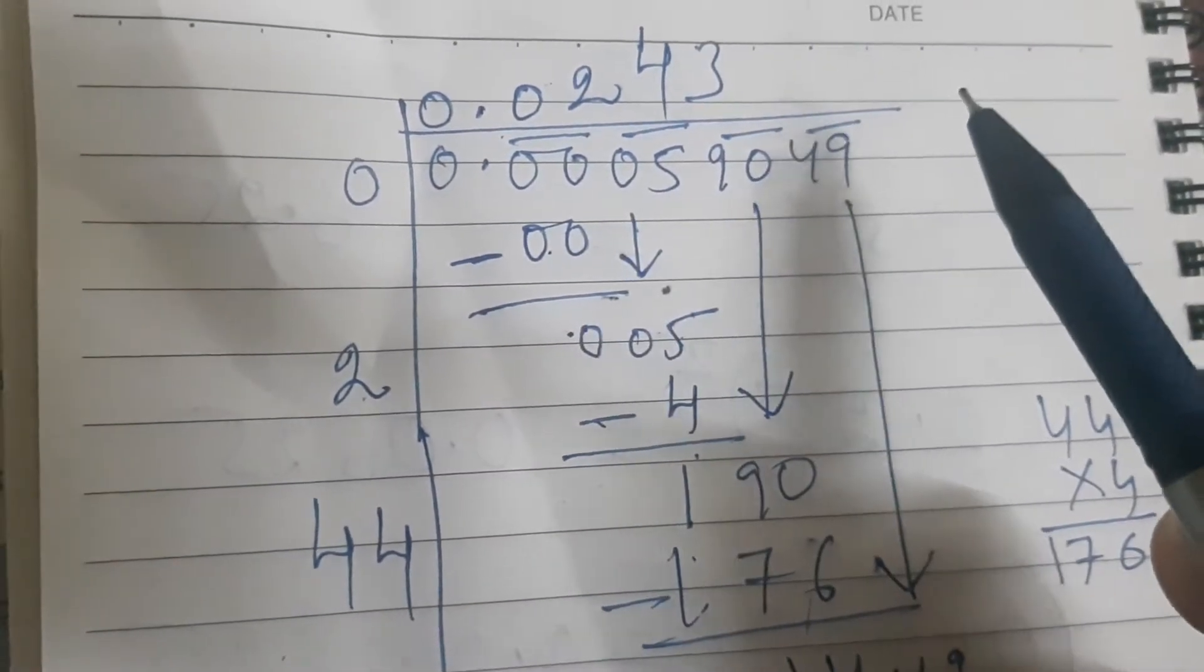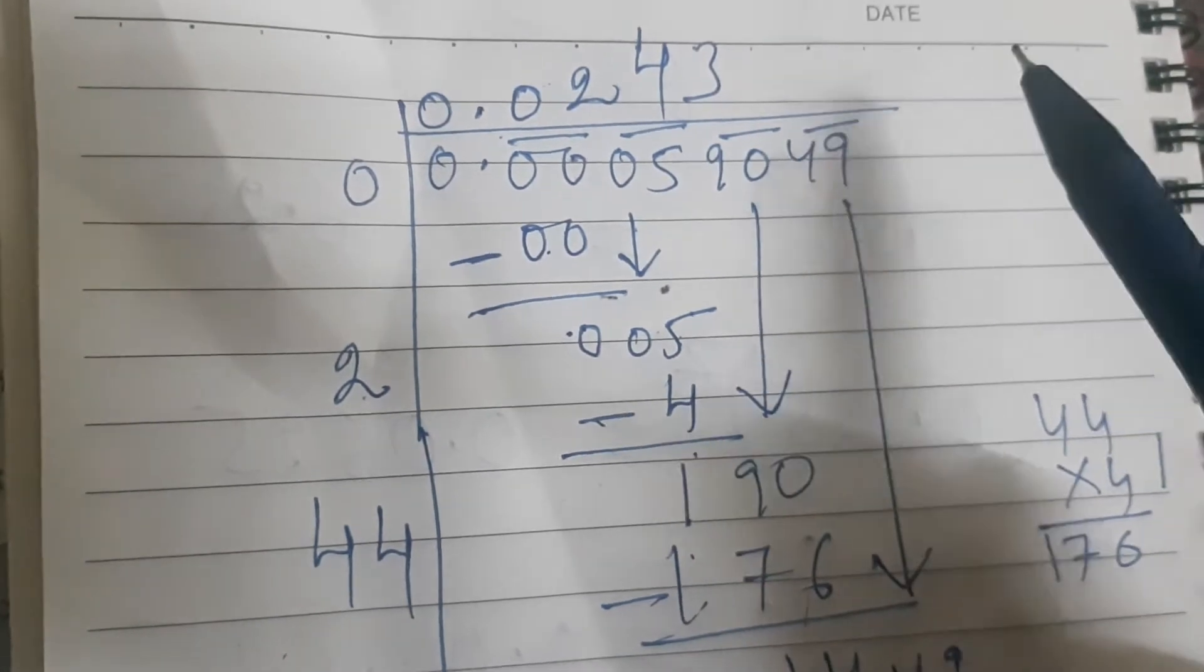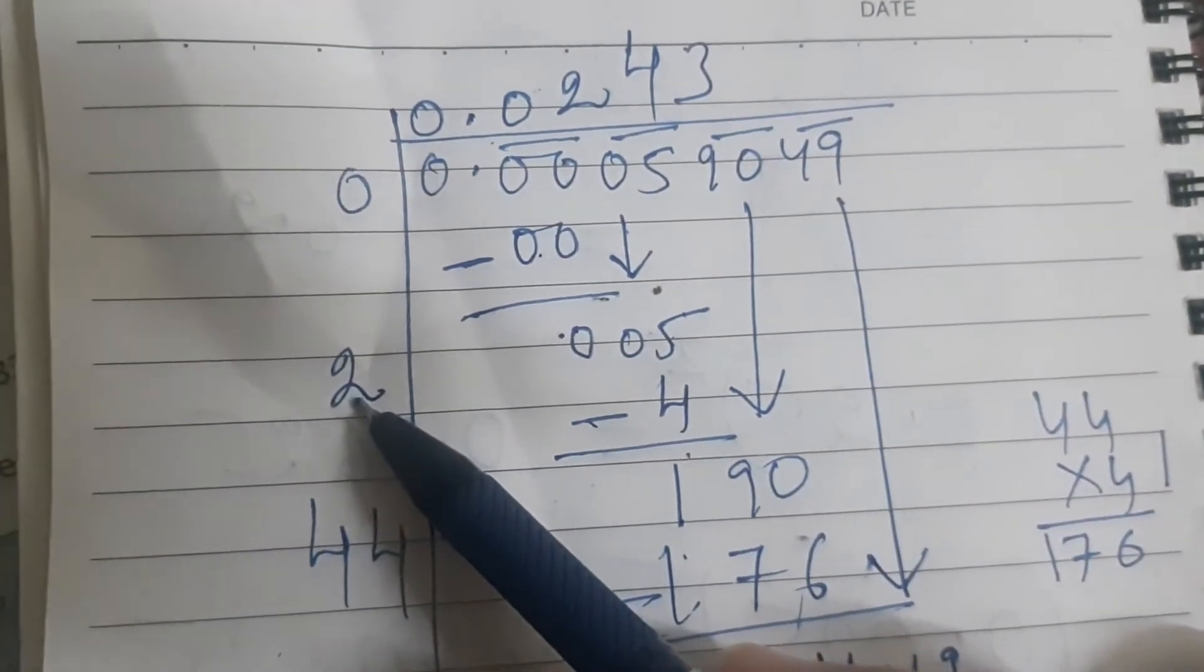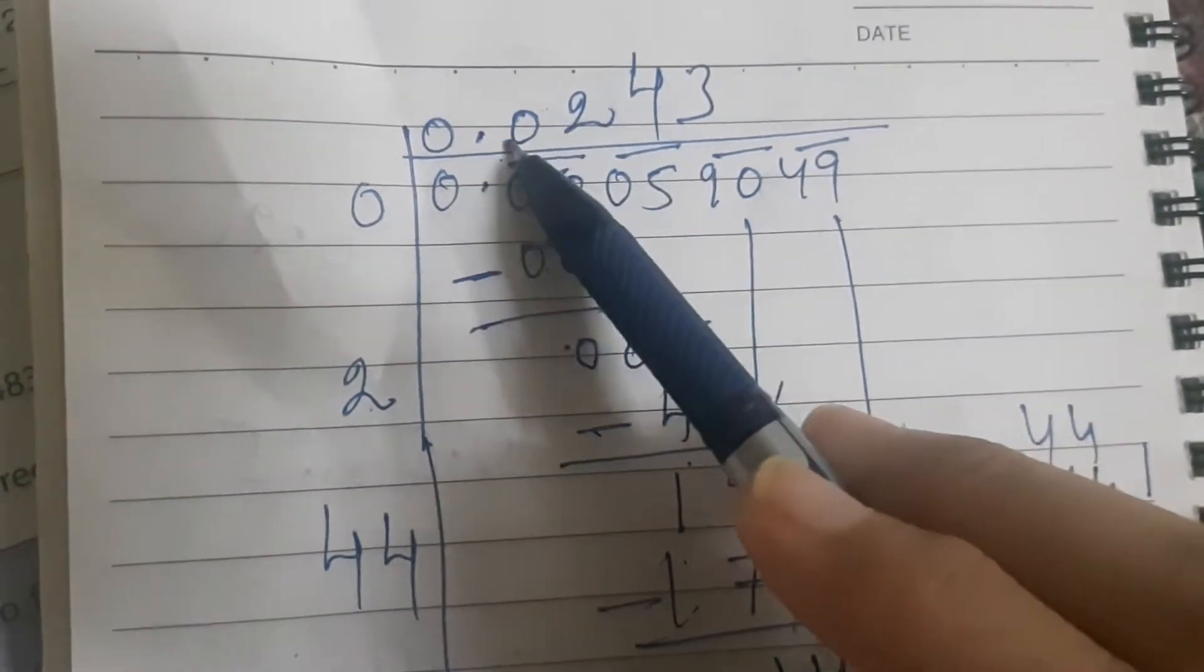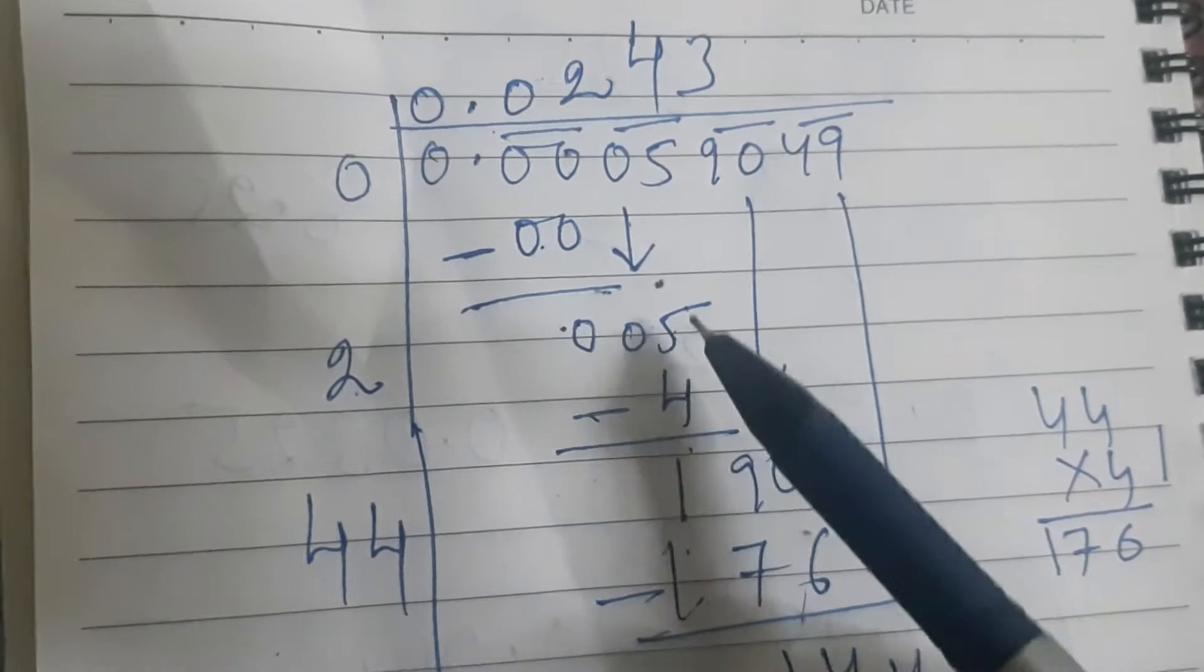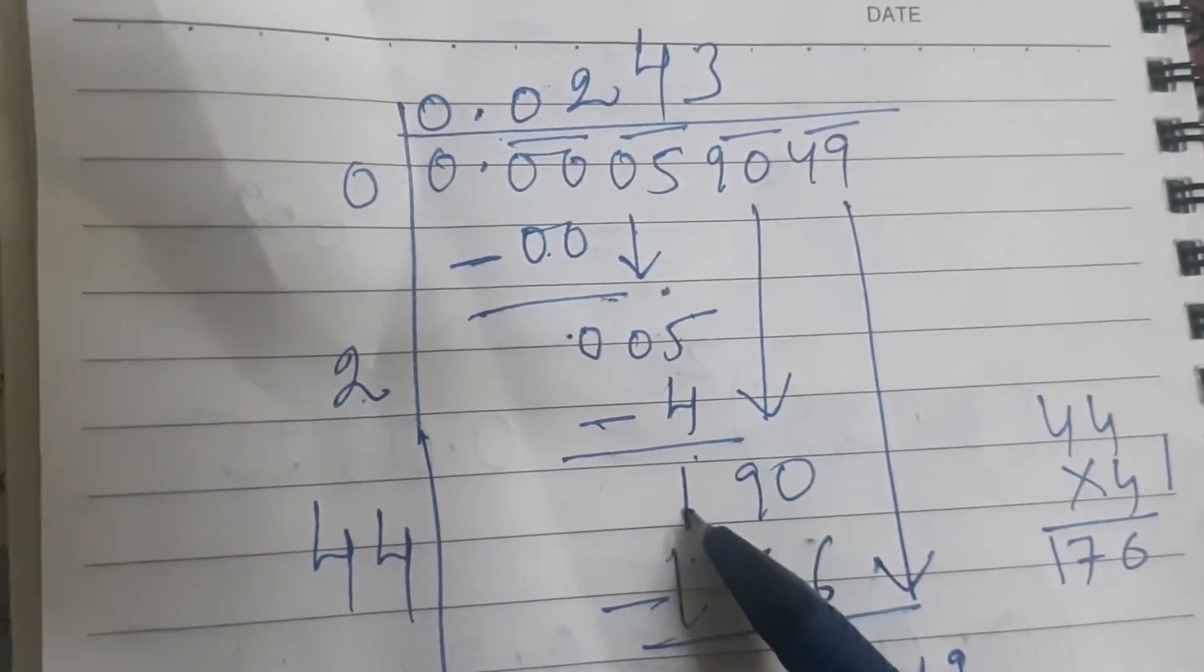So 1 square 1, 2 square 4, 3 square 9. So we will be choosing 2 square. So I have written here 2. Similarly, after this 0, I have written here 2. So 2 times 2 is 4. So what is 5 minus 4? It is 1.